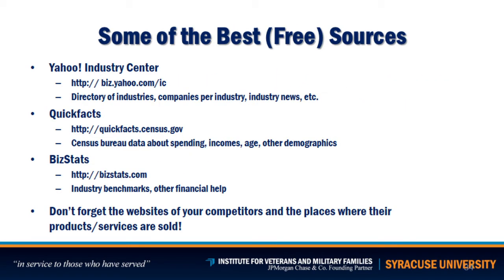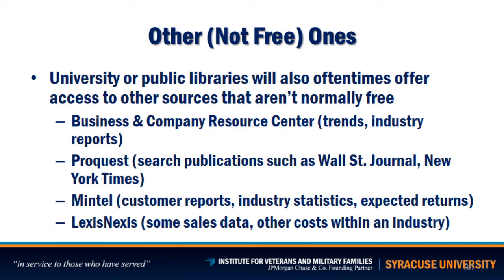Some of the best secondary research resources include the Yahoo Industry Center, which provides a directory of industries, companies per industry, and industry news. Quick Facts from the Census Bureau provides data about spending, incomes, age, and other demographics. BizStats.com provides industry benchmarks and other financial help. Don't forget the websites of your competitors and trade or retail associations. University or public libraries often offer access to sources that aren't normally free — make sure to visit your local library and connect with a business librarian.